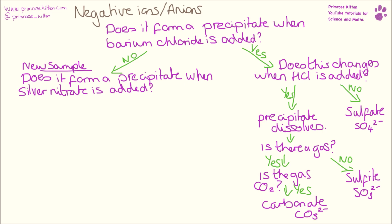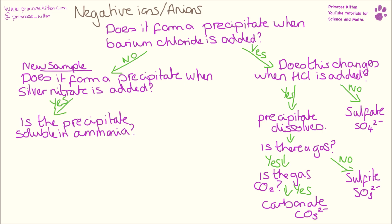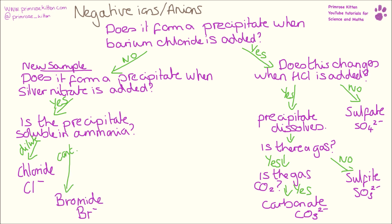If no precipitate was formed when barium chloride was added, take a new sample and test whether it forms a precipitate with silver nitrate. If it does form a precipitate, is this precipitate soluble in ammonia? If it is soluble in dilute ammonia, it is a chloride ion. If it is soluble in concentrated ammonia, it is a bromide ion. And if it is not soluble in ammonia, it is an iodide ion.